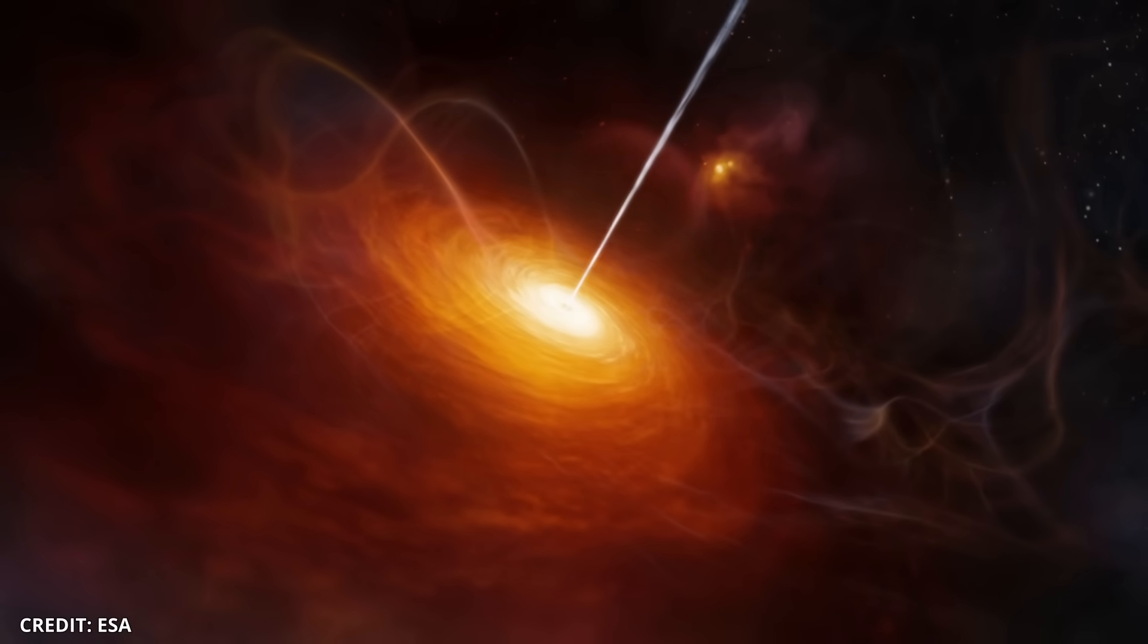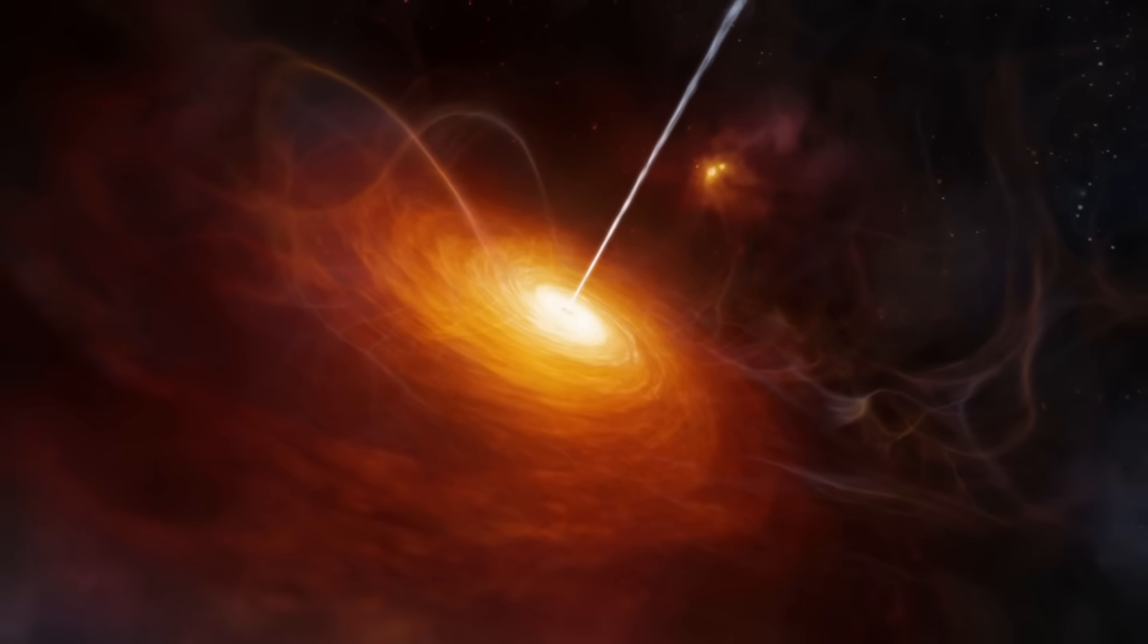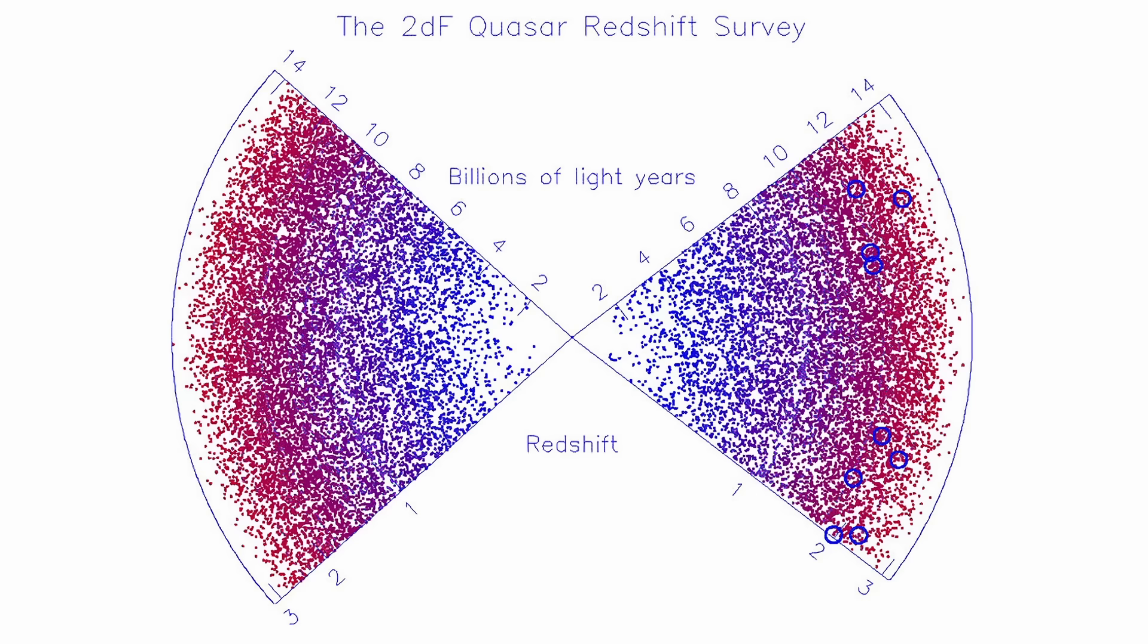Quasars are an ideal test. These are some of the brightest, most distant sources we can observe. They are scattered across the sky in enormous numbers, and their redshifts are measured with precision. If there is a universal motion, quasars should show it.